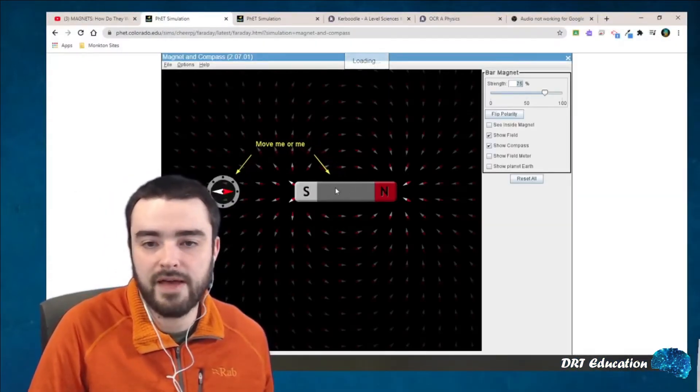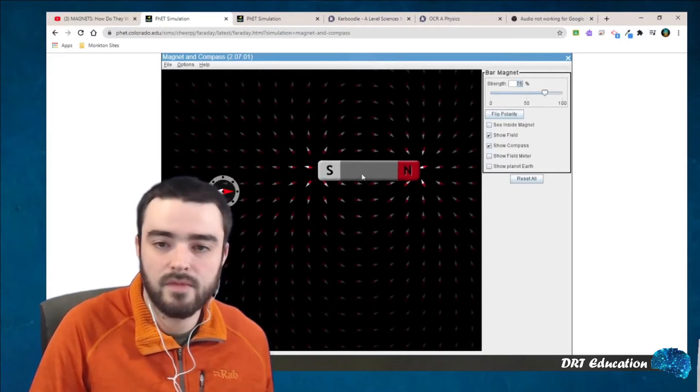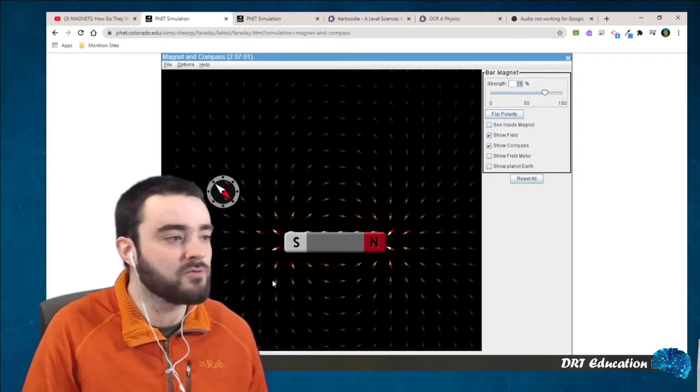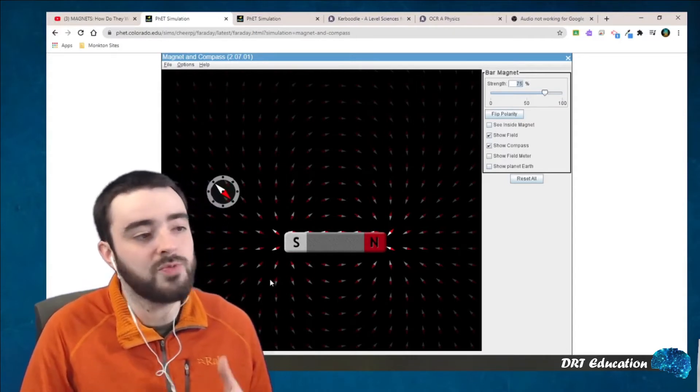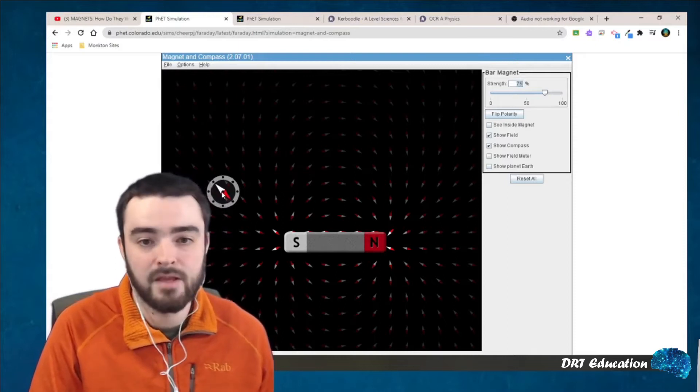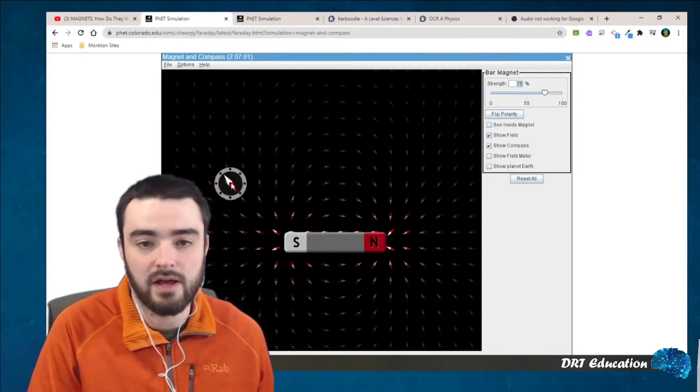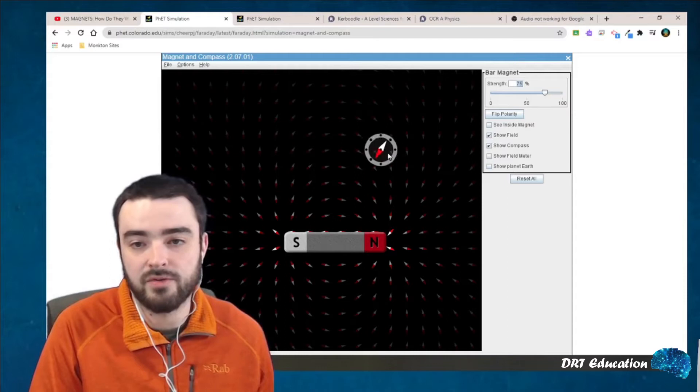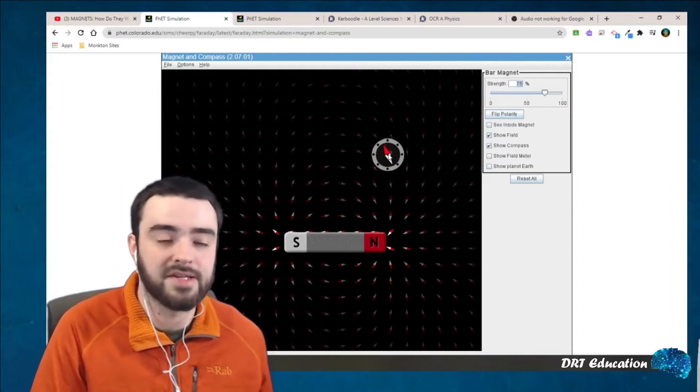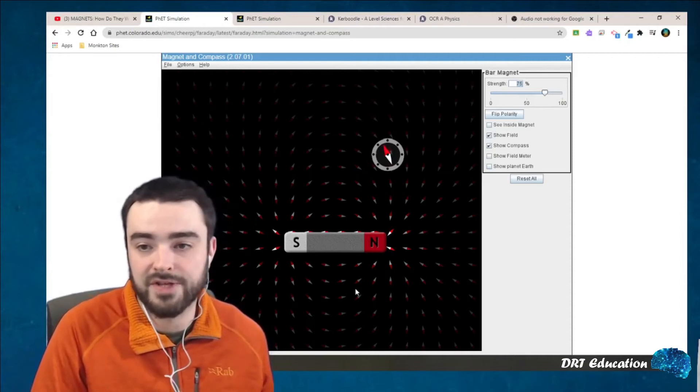So we have our bar magnet and we can see all these little lines. These are representing the force that would be applied to a magnetic material if it was there. Here is our magnetic material, our compass. If we move it around we see that the force it's experiencing changes depending on where it is in the magnetic field, this region of space.